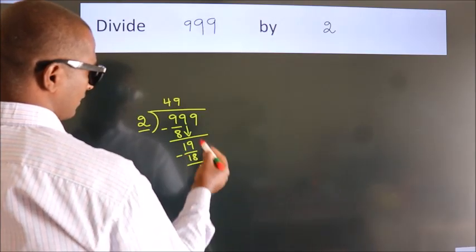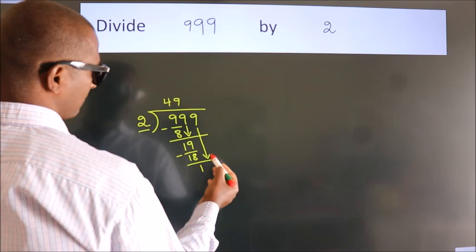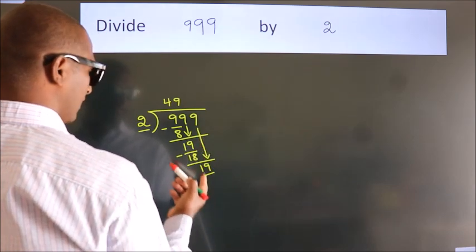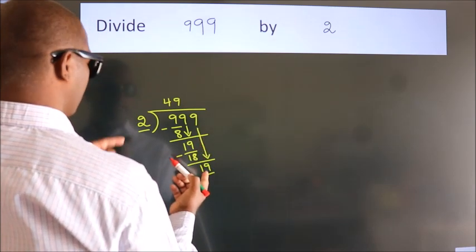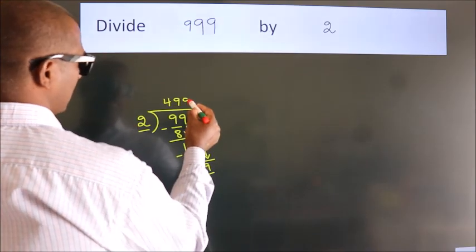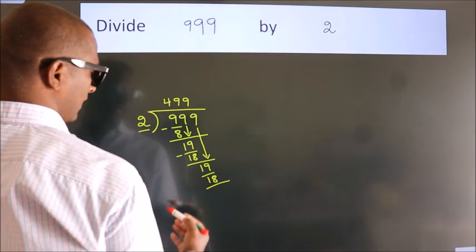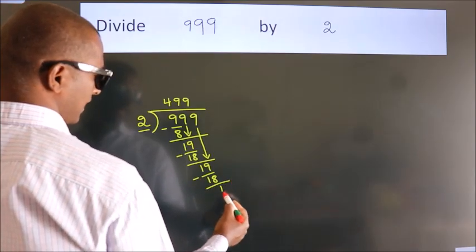After this, bring down the next number. So 9 down, so 19. A number close to 19 in 2 table is 2 times 9 is 18. Now we subtract. We get 1.